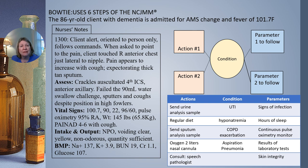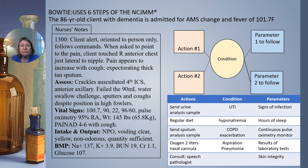Based on the nurse's notes, we drag our identified condition into the condition circle. Under actions: do we send a urine? Put the client on a regular diet? Send a sputum? Put the patient on two liters of nasal cannula? Consult speech pathology? Under parameters to follow: monitor for signs of infection? Monitor hours of sleep? Continuously pulse ox? Monitor lab results? Or monitor skin integrity? Remember, actions are not all right or wrong — we are always prioritizing and most closely linking to the condition.